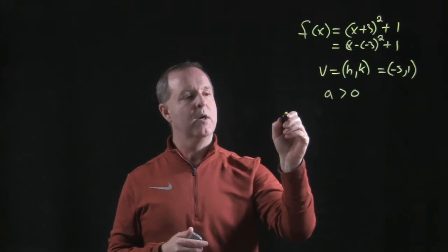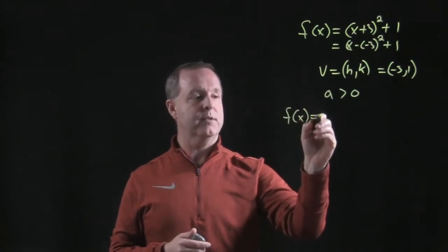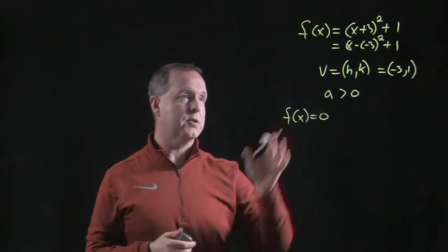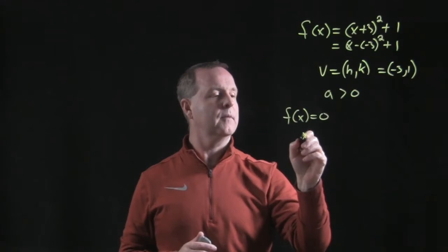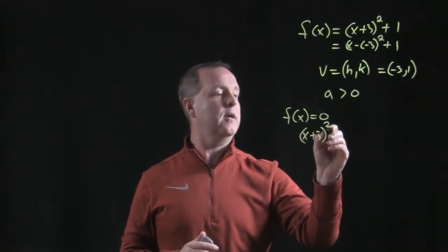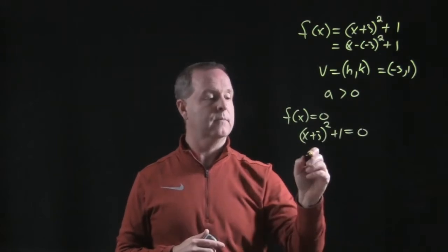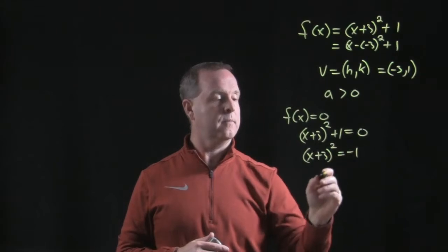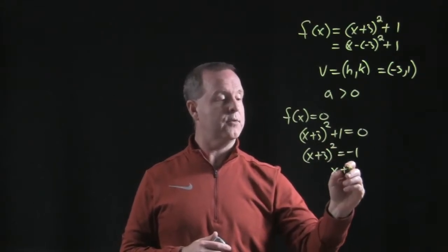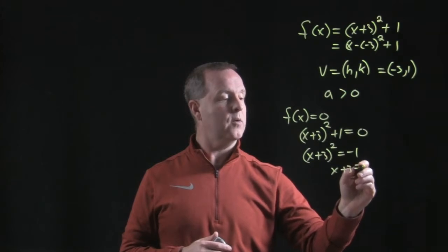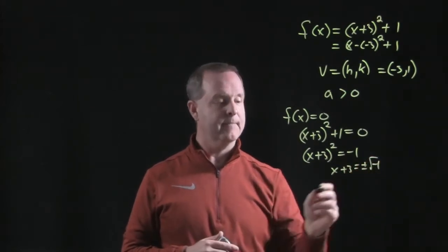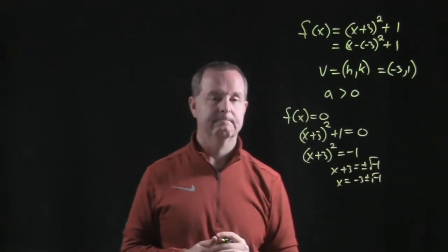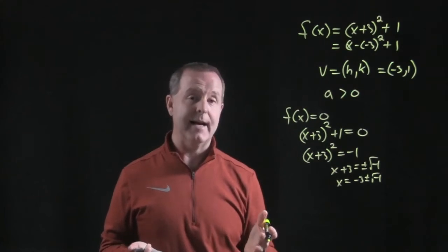Next thing we want to find out is, what happens when f of x equals 0? That helps us determine where its x-intercepts are at. So let's solve this equation. x plus 3 squared plus 1 equals 0. Take the square root of both sides, we have x plus 3 equals plus or minus the square root of negative 1, and then x equals minus 3 plus or minus the square root of negative 1. That tells me that I have complex roots.